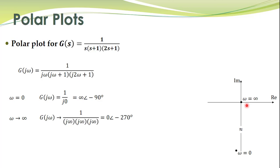As omega increases from zero to infinity, the angle becomes more and more negative and the magnitude decreases. So the rough sketch moves from the infinity point toward the origin. We cannot draw it going the other way because the endpoint is at minus 270 degrees — so for omega slightly less than infinity, the angle is approximately minus 269 degrees, placing that point accordingly.